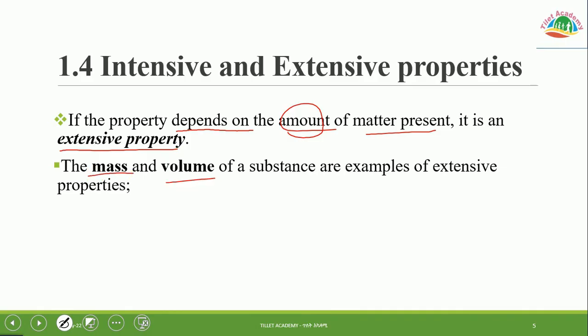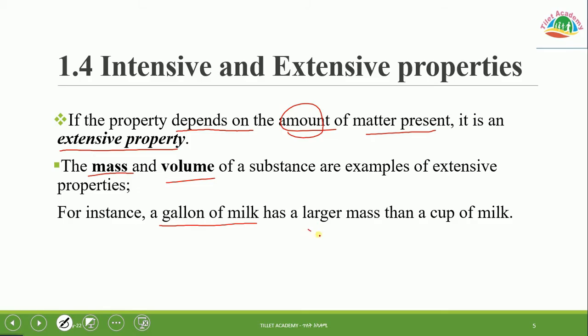Mass and volume of a substance are examples of extensive properties. For instance, a gallon of milk has larger mass than a cup of milk.